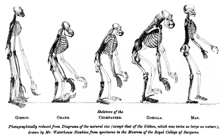Huxley's conclusion — that man differs from apes at the level of a family — may be compared with the opinion today that the distinction between the great apes and man is at the level of a subfamily, the Homininae, or at the level of the tribe Hominini, or even at the level of the subtribe Hominina. The Australopithecines separate man from the great apes, and the genus Homo is almost certainly an offshoot of the early Australopithecines, upright apes of the wooded savannah. The general opinion today is that man is more closely related to apes than even Huxley thought.